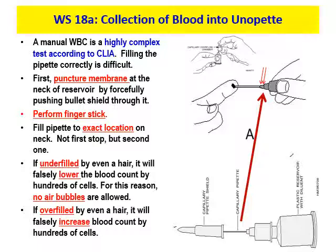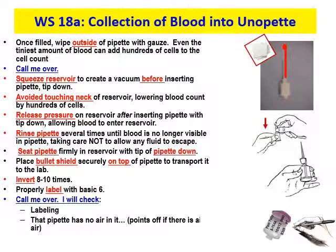We take our time to make sure collection is done spot on because we want to give out a valid result. The procedure is lined out in Chapter 9 as well — the pipette must be rinsed with the fluid from the reservoir to make sure all the blood comes out of the capillary pipette and gets down into the reservoir. Once the pipette is filled, wipe the outside with chem wipes or gauze, because even the tiniest amount of blood on the outside can add hundreds of cells to the cell count.